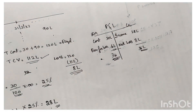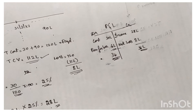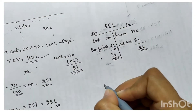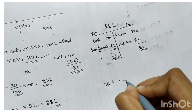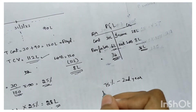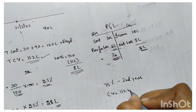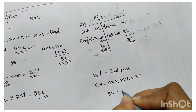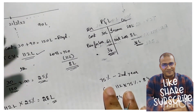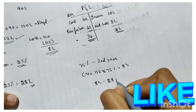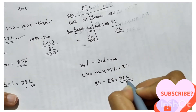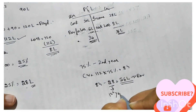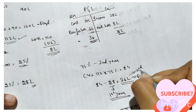Question three: what is the revenue to be recognized for year two? The answer is Option C — 56 lakh. As given in the question, 75 percent of the work is completed up to end of year two. So 75 percent of contract value 112 lakh is 84 lakh. But we have already recognized 28 lakh in year one, so 84 minus 28 equals 56 lakh. Only 56 lakh has to be recognized as revenue for year two.